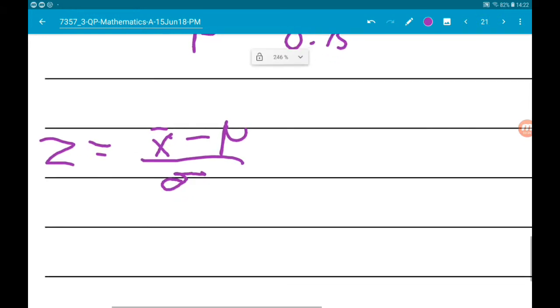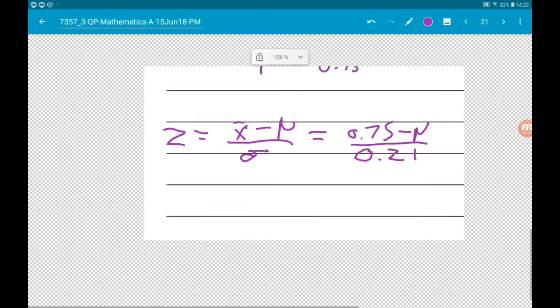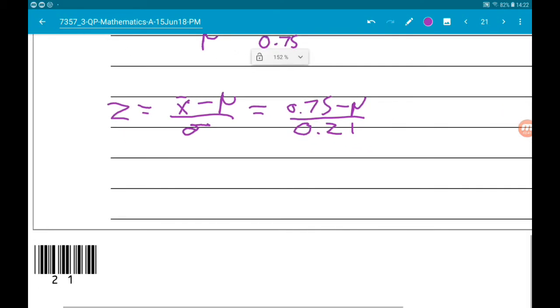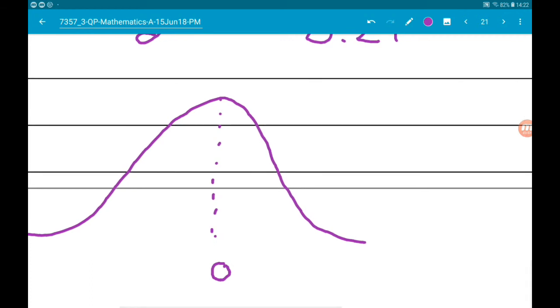For us, Z is 0.75 minus mu over 0.21. When we've standardized it, we're going to have a mean of zero and a standardization of mu over 0.21.